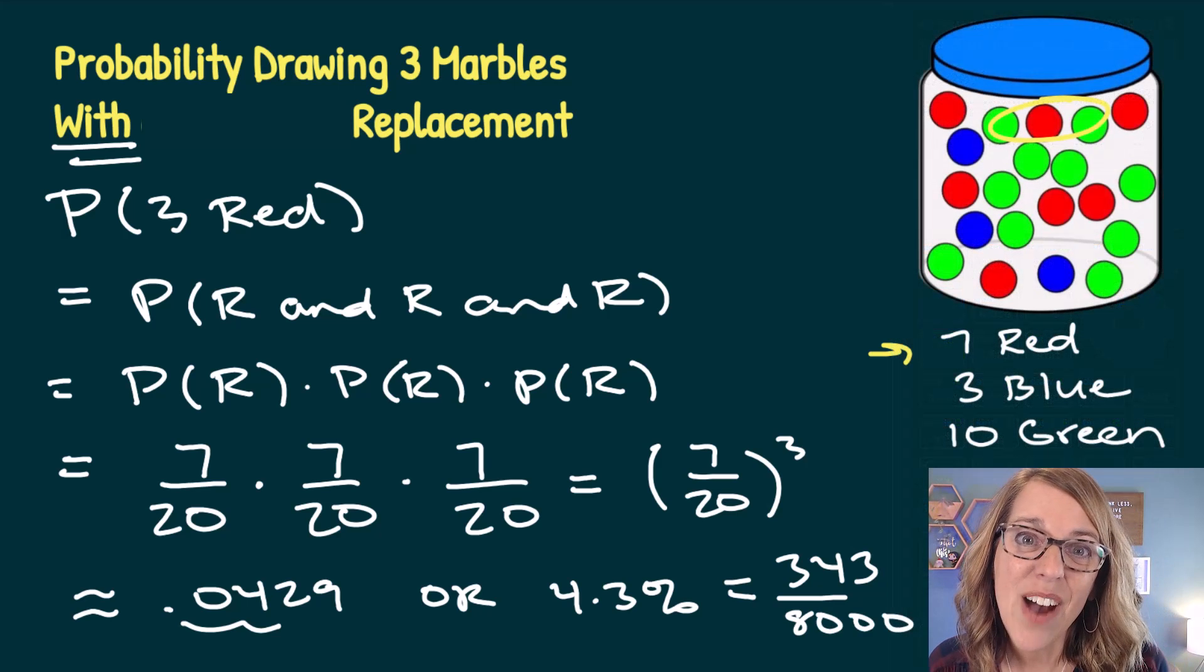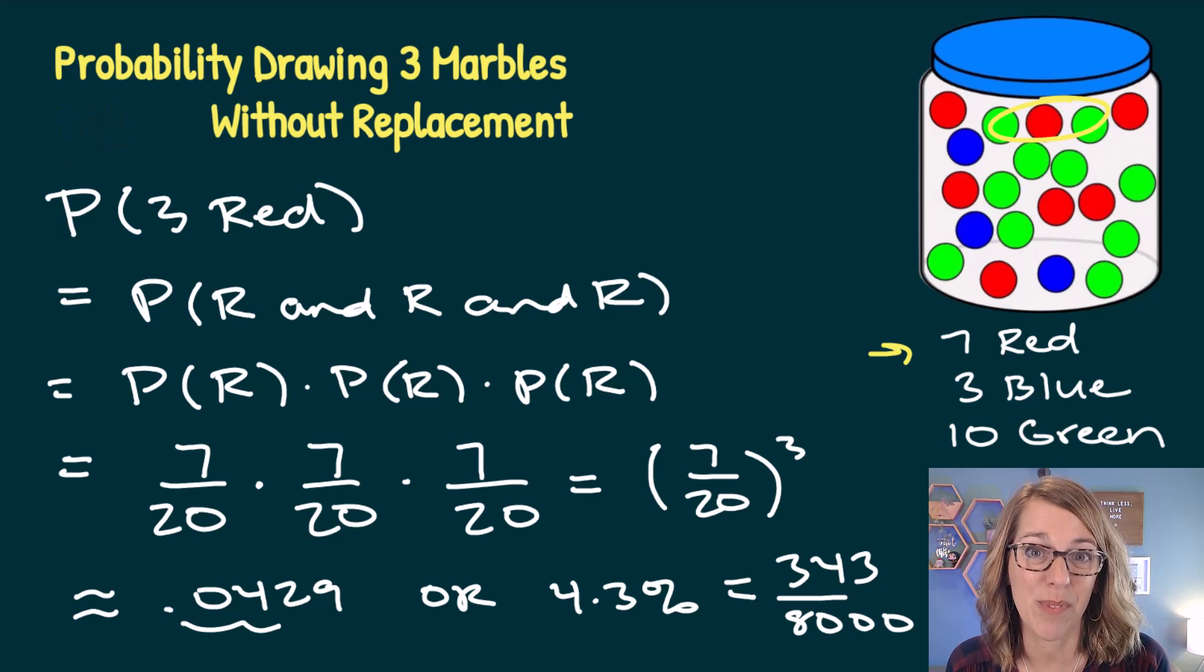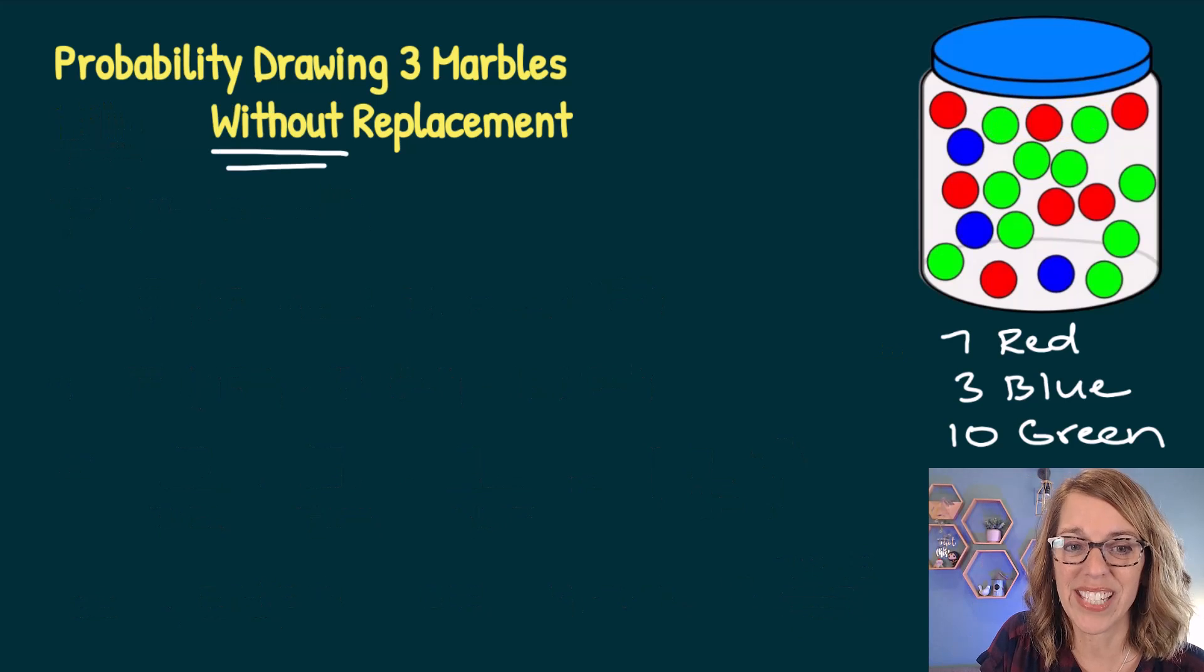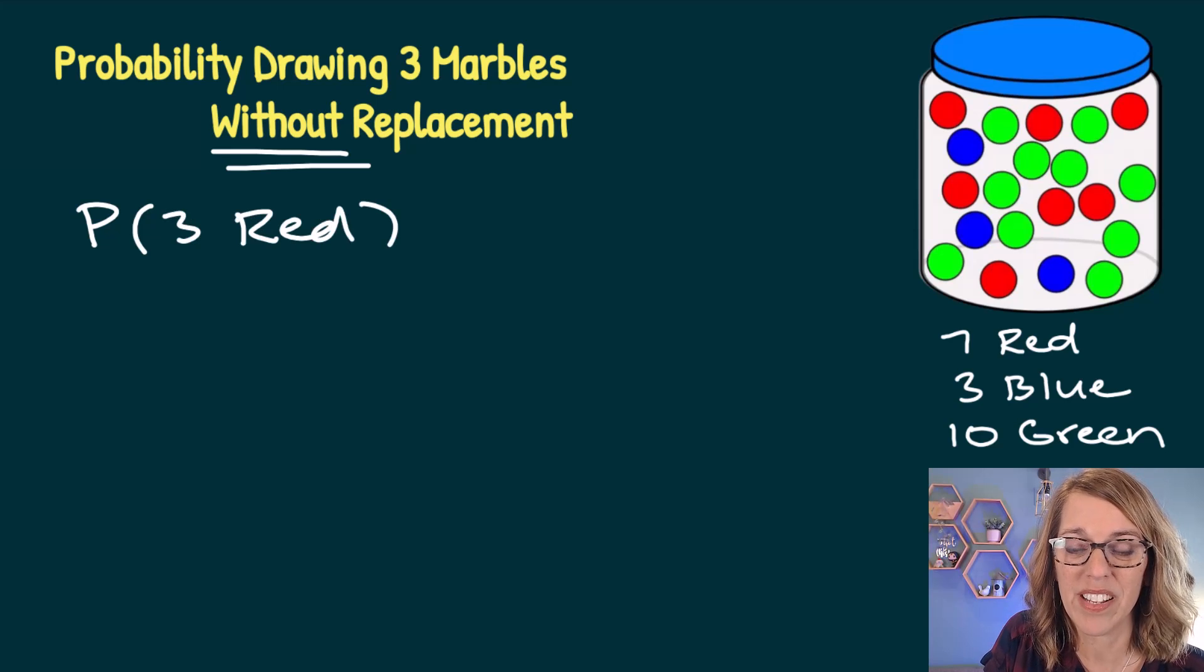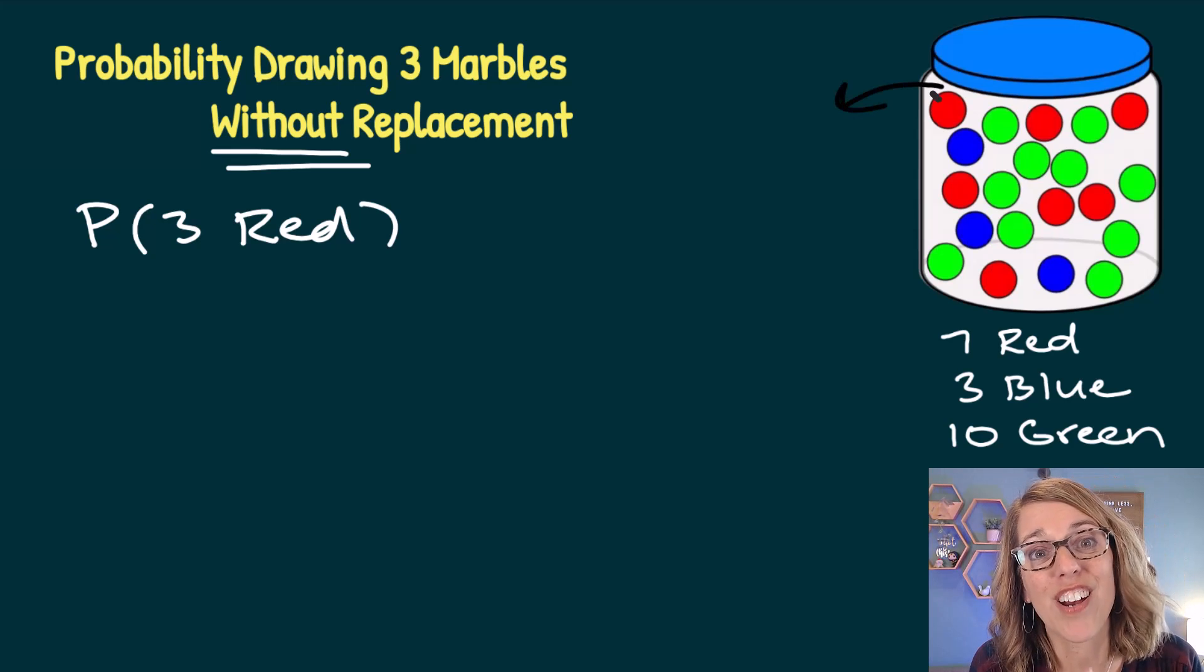Okay, now let's do this without replacement. I've got that same scenario, but without replacement, when I go and choose each red marble, I'm going to choose a marble, and once I've drawn it out of the jar, it's gone and I'm going to go back in with one less marble.